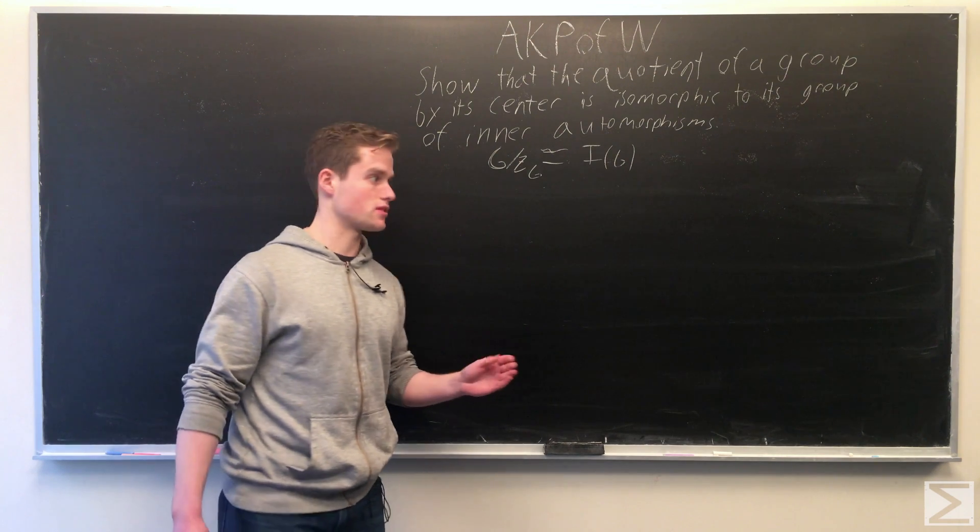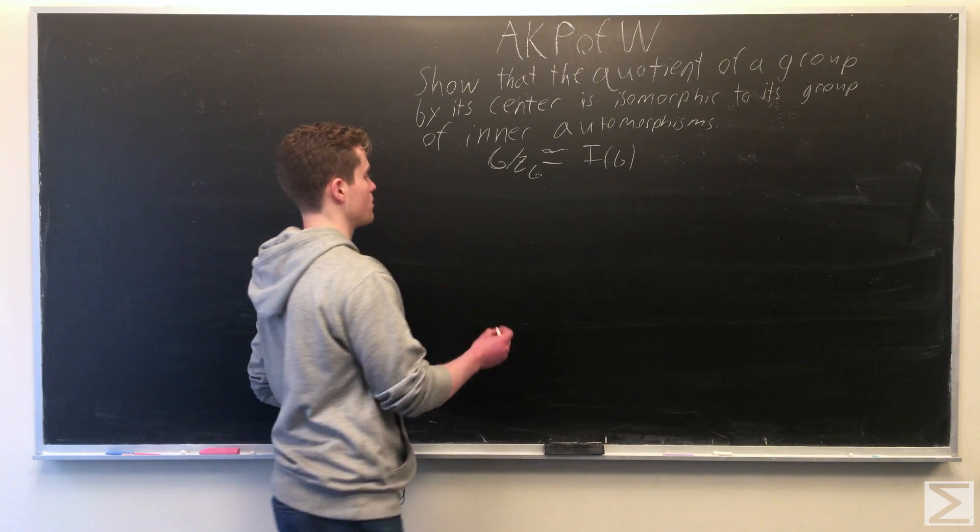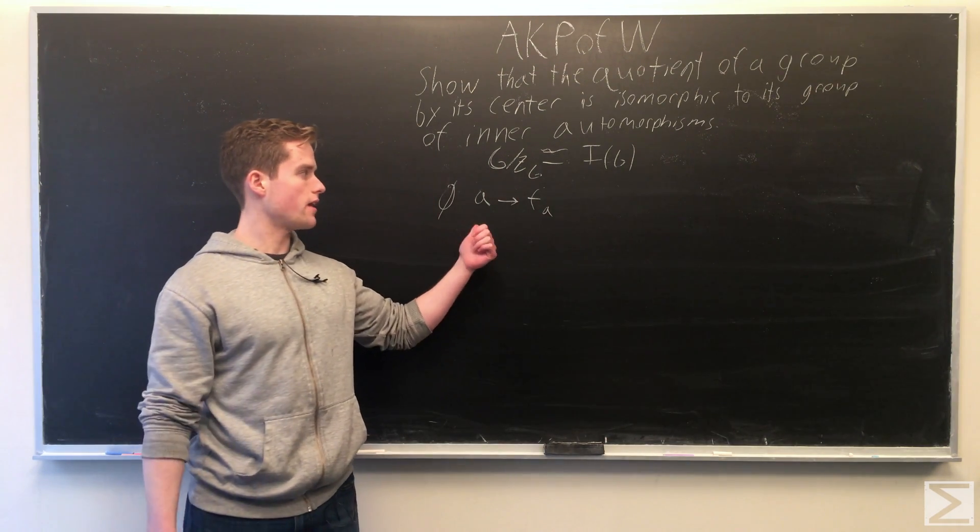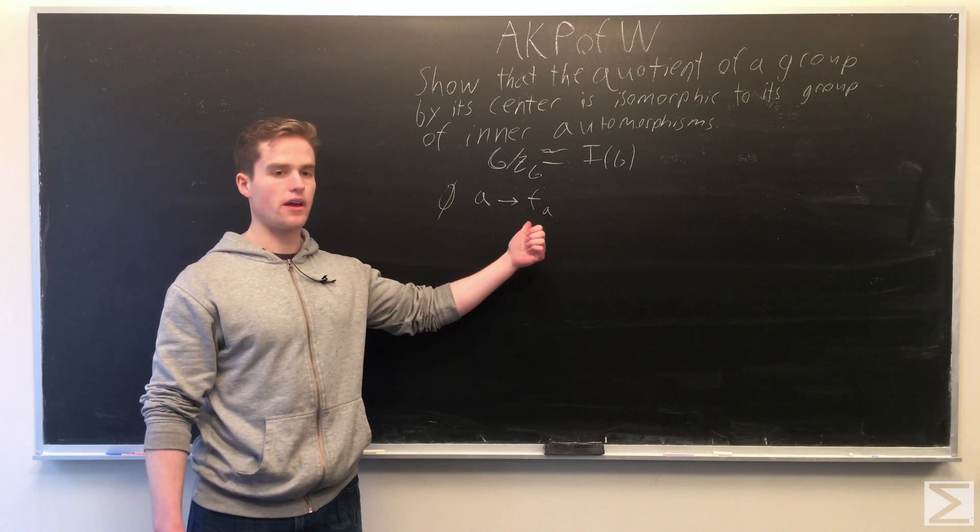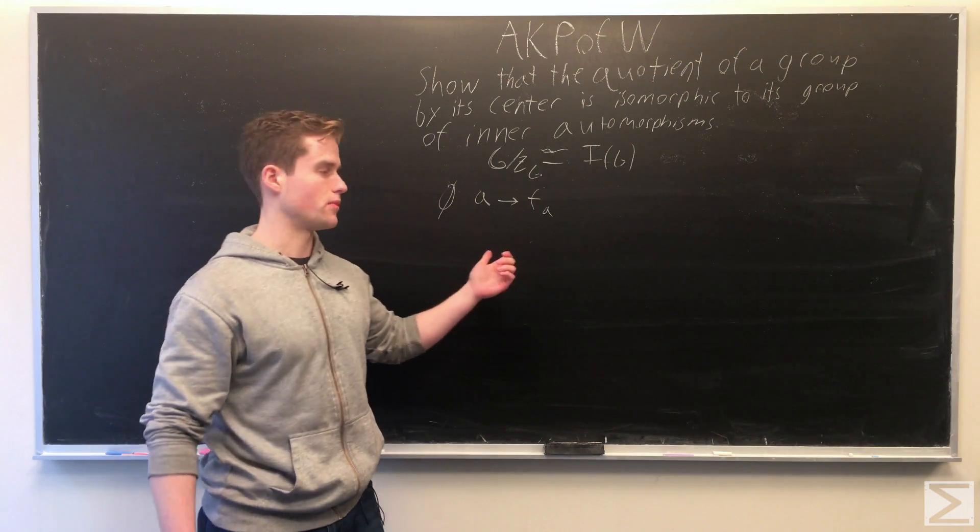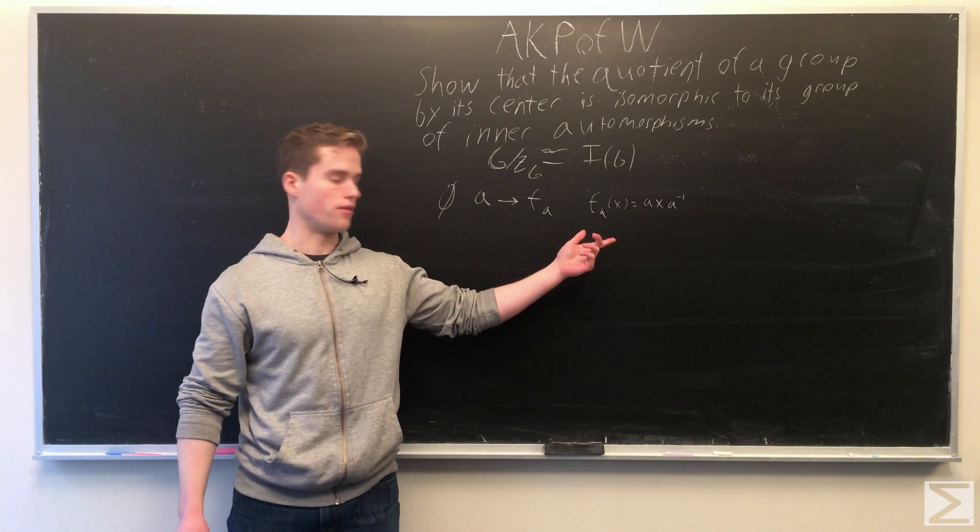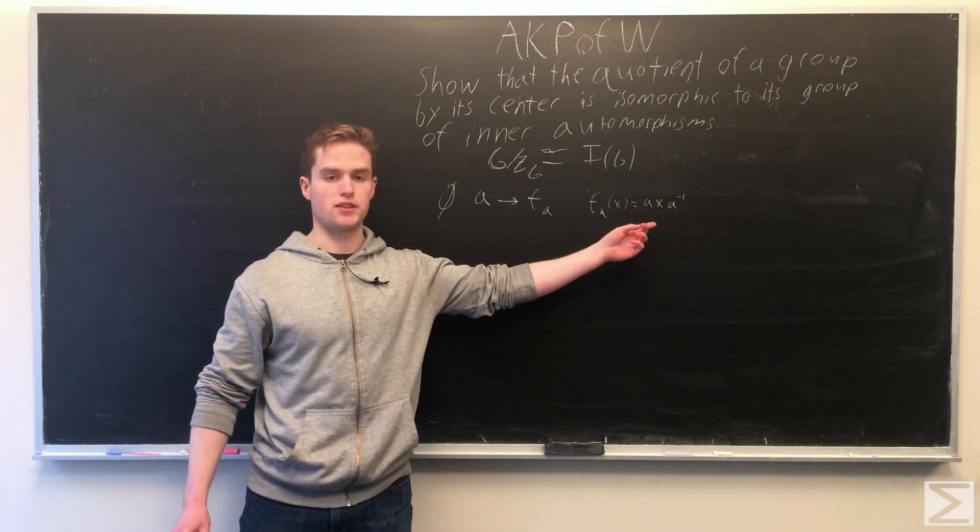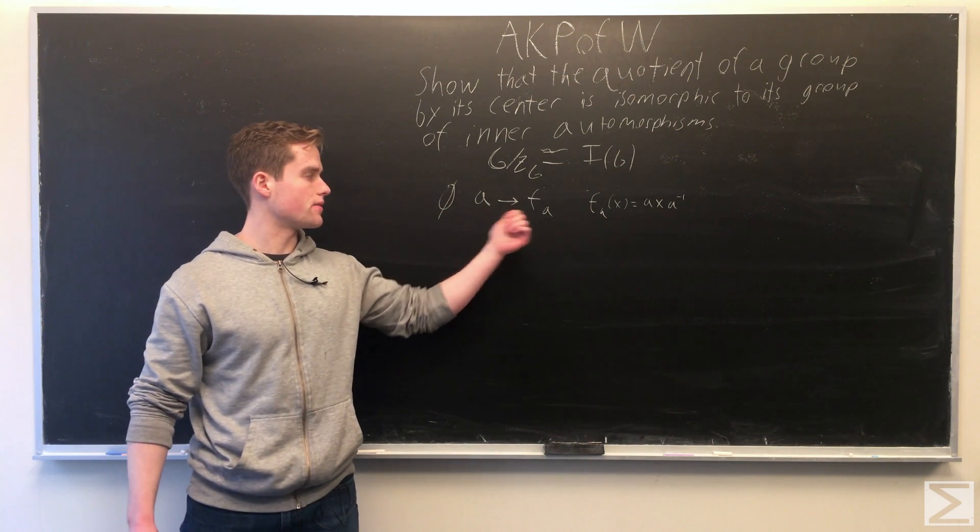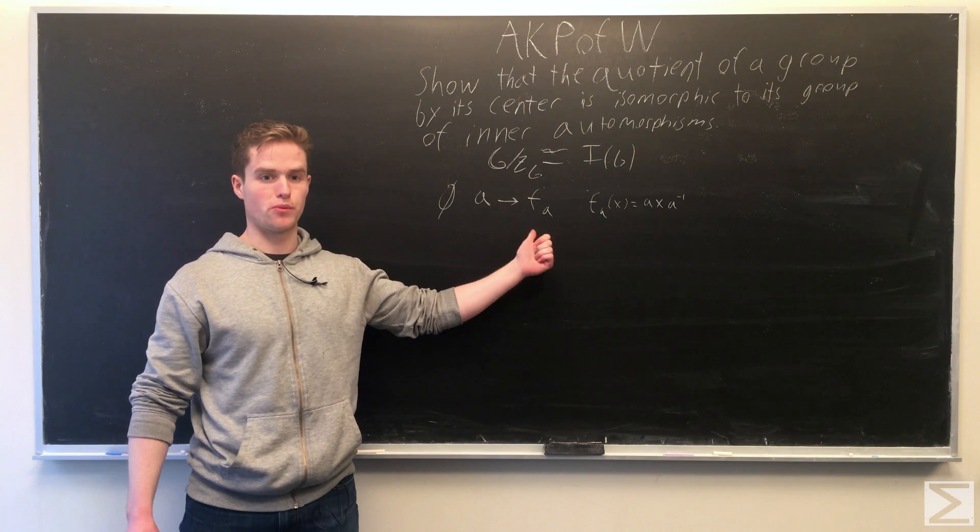We'll establish a homomorphism from G to its inner automorphisms. For every A, we send A to F(A), where F(A) is the inner automorphism given by F(A)(X) = AXA^(-1). We make the inner automorphisms a group under composition.